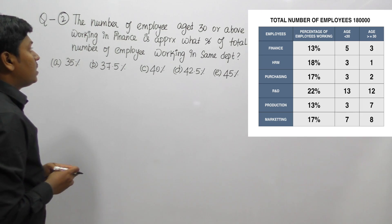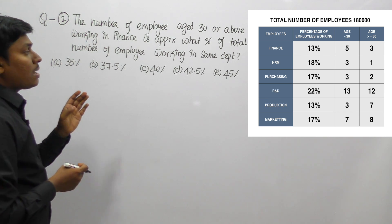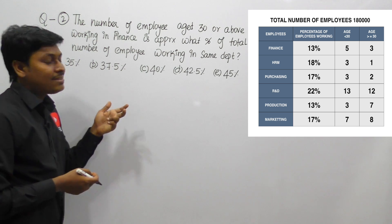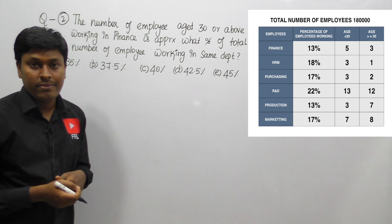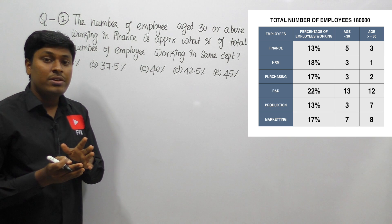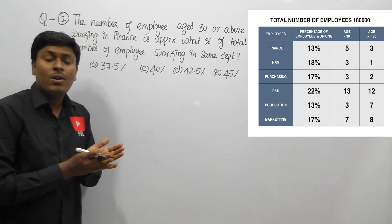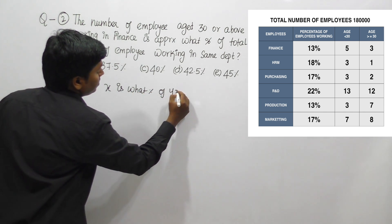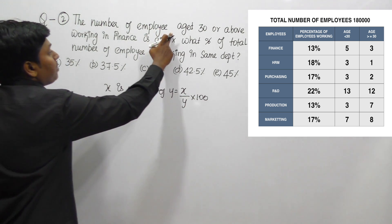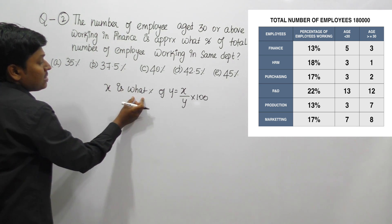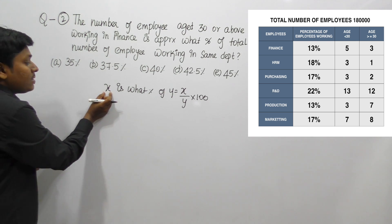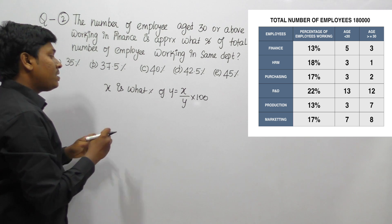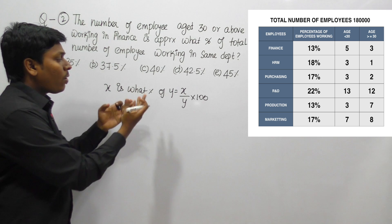Question 2: the number of employees aged 30 or above working in finance is approximately what percentage of total number of employees working in the same department? After reading this question, we can say it looks like the format: X is what percentage of Y? The formula is X divided by Y into 100. Here X is employees aged 30 or above in finance, and Y is the total number of employees working in the finance department.